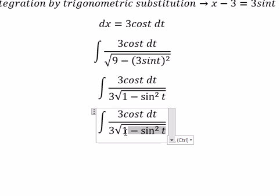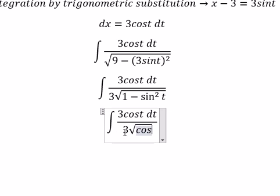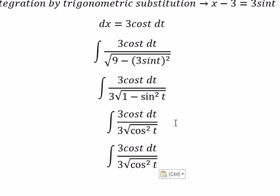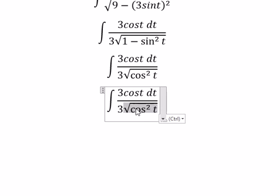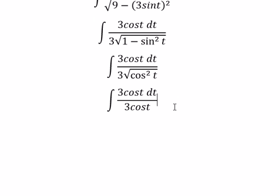So this one we got cos t square. The square root of cos t square, you got cos t. And this one you got dt. And we got t plus c.